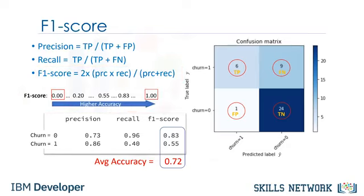For example, the F1 score for class 0, i.e. churn equals 0, is 0.83. And the F1 score for class 1, i.e. churn equals 1, is 0.55. And finally, we can tell the average accuracy for this classifier is the average of the F1 score for both labels, which is 0.72 in our case.